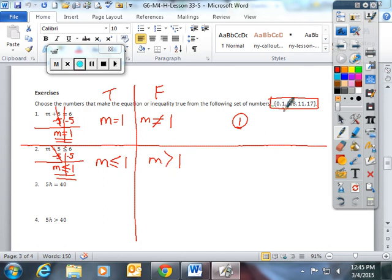We looked at the list of numbers that was given to us in the directions. All the values that are less than or equal to 1 in that set will make this inequality true. This actually has two solutions from this set: 0 and 1 will make this inequality true.